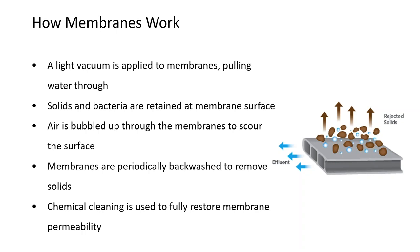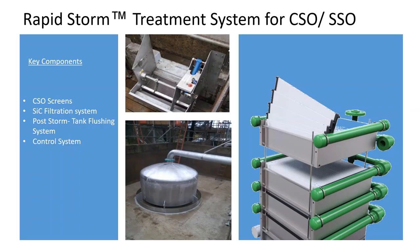Periodically, the membranes are chemically cleaned. The most common cleaners are bleach or some type of acid. The membranes are chemically cleaned to restore membrane permeability. In this wet weather treatment situation, the chemical cleaning is performed at the end of a storm event.